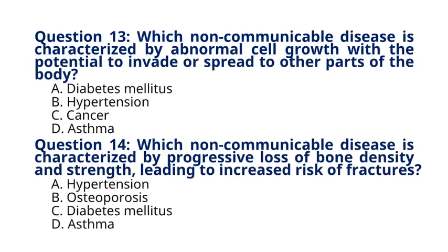Question 13: Which non-communicable disease is characterized by abnormal cell growth with the potential to invade or spread to other parts of the body? A. Diabetes mellitus, B. Hypertension, C. Cancer, D. Asthma. The correct answer is option C, Cancer. Explanation: Cancer is a group of diseases characterized by uncontrolled cell growth and proliferation, with the potential to invade nearby tissues and metastasize to distant organs.